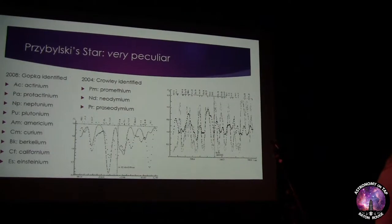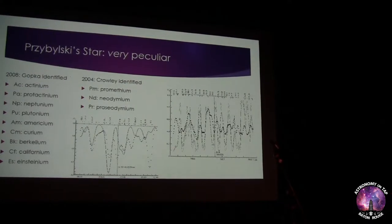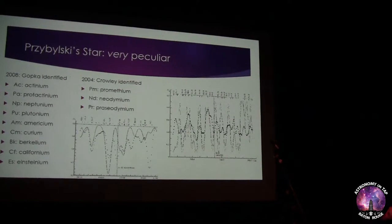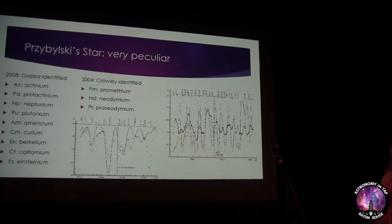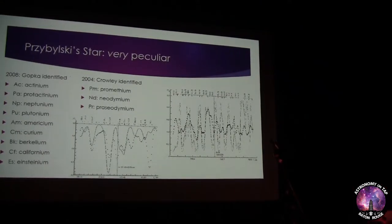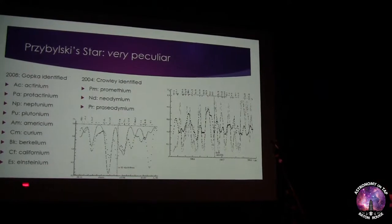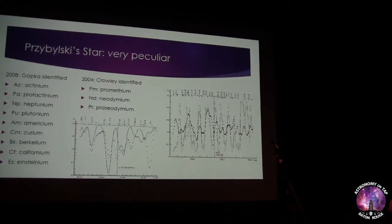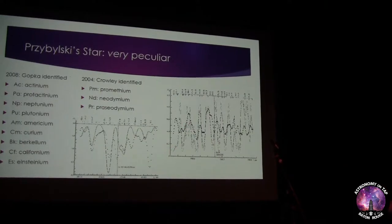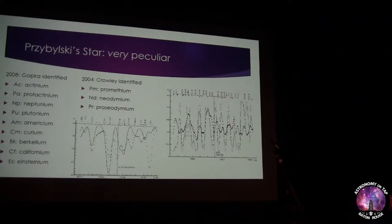In the 2000s various people went back and looked at the spectrum of this star because techniques and instruments had advanced. In 2004, Crowley identified promethium, neodymium, and praseodymium — weird heavy elements. In 2008, Gopka identified a whole bunch of actinides on the periodic table. Some of those features show up in these spectra.